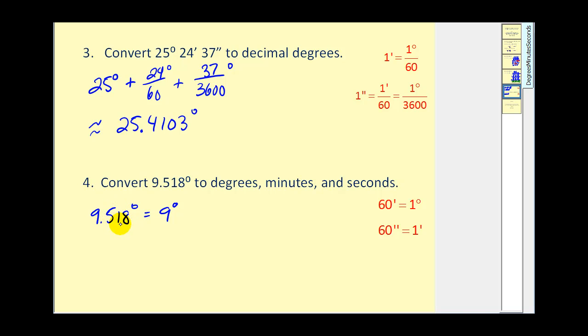We know we have 9 degrees. The decimal part of this degree represents a certain number of minutes. So we have 0.518 times, this is a fraction of a degree, and each degree would be 60 minutes. So we multiply this by 60. That will give us the number of minutes. This works out to 9 degrees, 31.08 minutes.